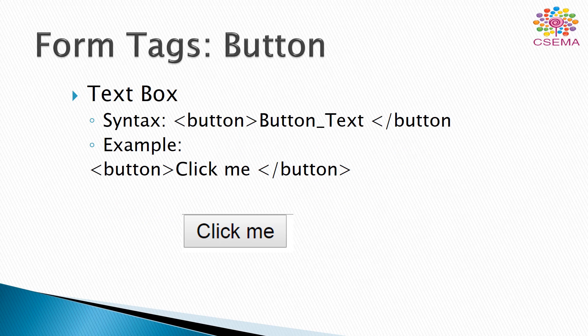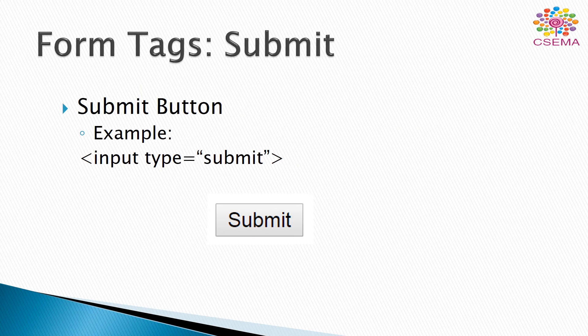Another control is the button tag, which is used to create a button on an HTML form or document. We use the button tag with any text between the opening and closing tags. For example, 'Click Me' creates a button with that label, and its output is shown here. Another tag is submit — the submit tag is used after completely filling out the data to send it to the database or server. After clicking submit, the query is fired and all the data is sent to the database or server.